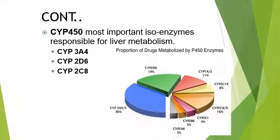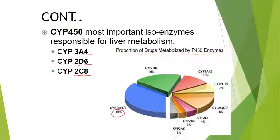Cytochrome P450 is the most important isoenzyme and is responsible for liver metabolism. There are many types of CYP450 enzymes — for example, CYP3A4, CYP2D6, and CYP2C8. As you can see in this pie chart, these are the proportions of drugs metabolized by P450 enzymes. 36% of drugs — the major portion — are metabolized by CYP3A4, followed by CYP2D6, then CYP1A2, and so on.